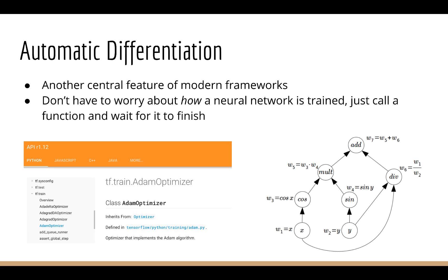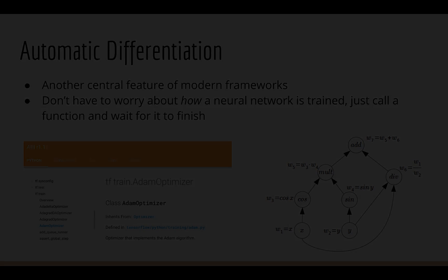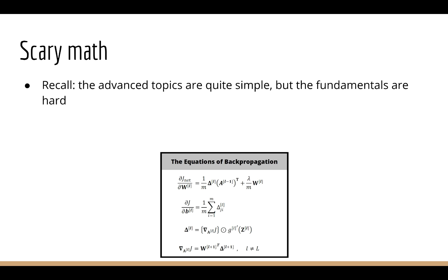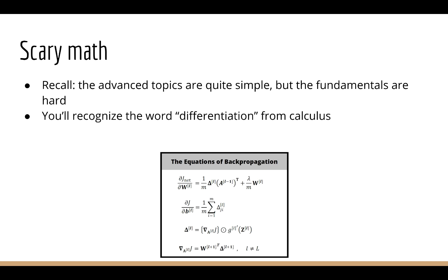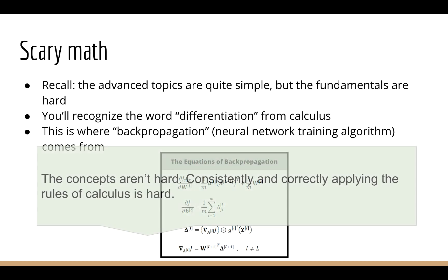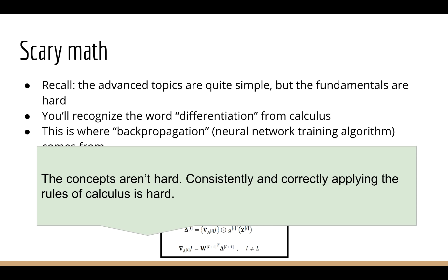But what is automatic differentiation, and why do we need it? This is where all that scary math comes into play. The advanced topics are actually quite simple — it's these fundamentals that cause students the most trouble. The deeper you want to go into understanding how things work, the more technical things get. You might recognize the word differentiation from calculus. We use an algorithm known as backpropagation to train neural networks, and all it involves is ordinary differential calculus — nothing any first-year undergraduate hasn't seen before. It's hard not because any individual concept is particularly hard, but because consistently and correctly applying the rules of calculus is hard when you have complicated equations, as you do when working with neural networks.